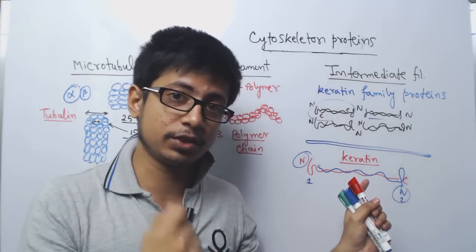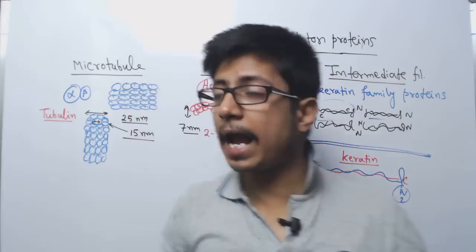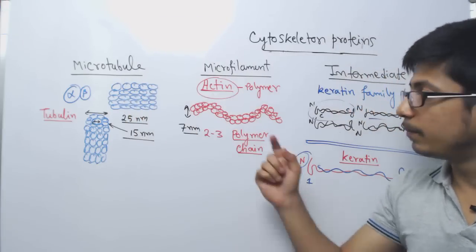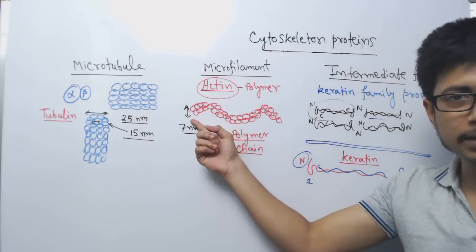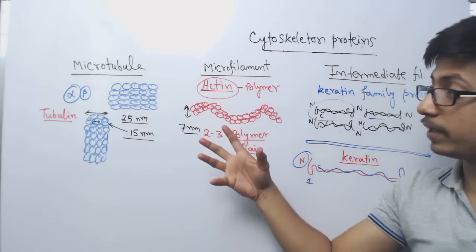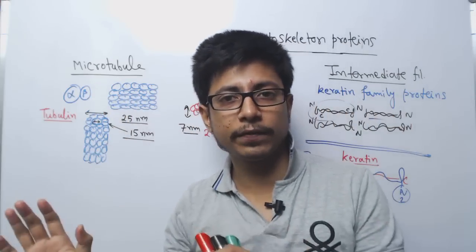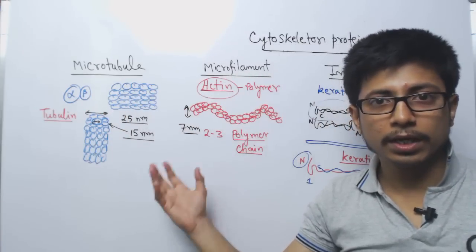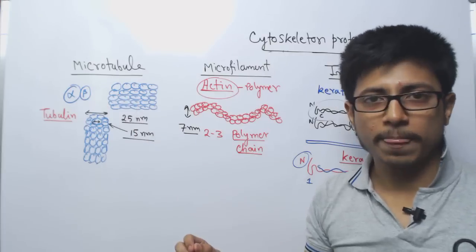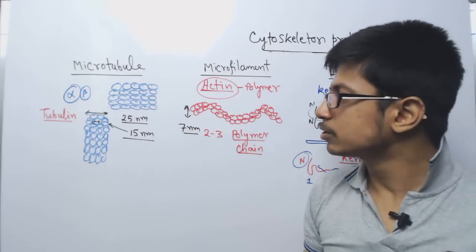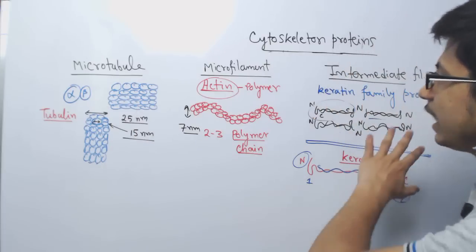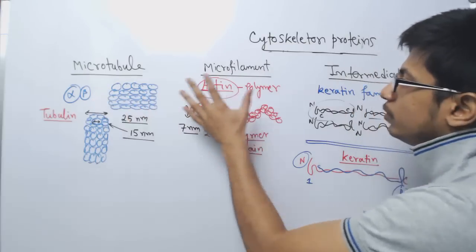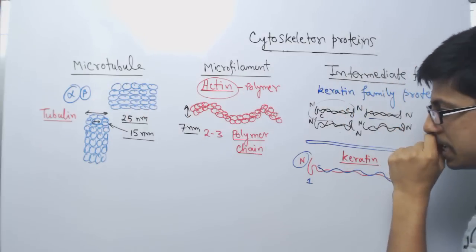Actin filament is also fibrous in nature, but it is very thin and its job is different. While microtubule is completely different — it is a hollow tube whose structure is organized by tubulin polymer. So that is the structural difference between microtubule, microfilament, and intermediate filament.